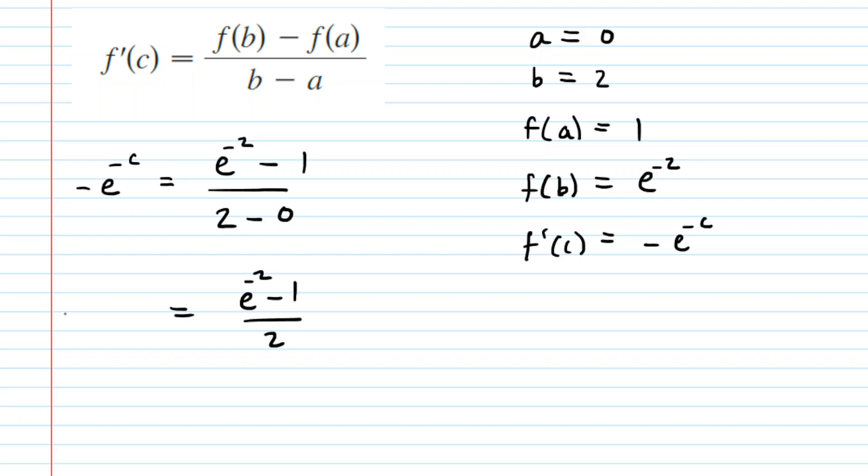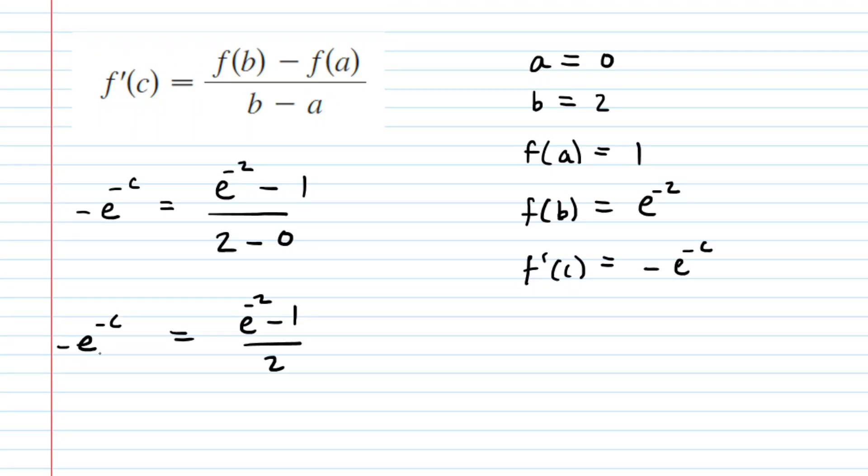And now our job is to solve for the value of c. And this looks a little bit daunting, but let us begin that process by writing this over 1. And once we do that we can cross multiply. So we'll multiply those two quantities as well as those two quantities.